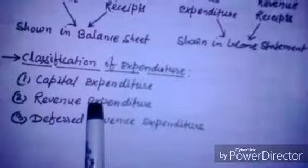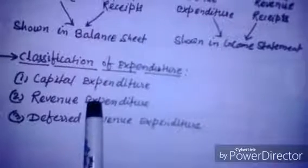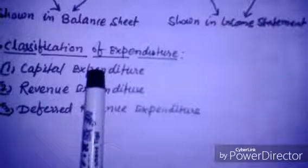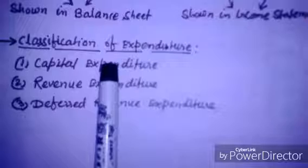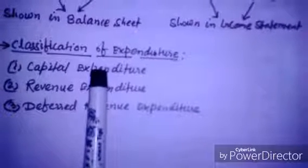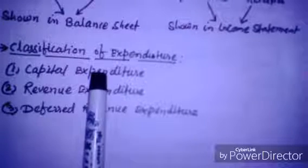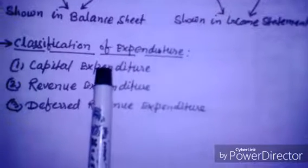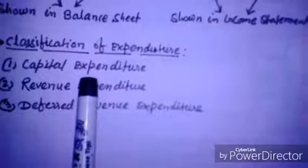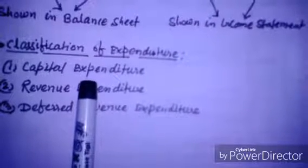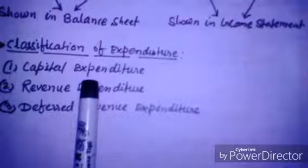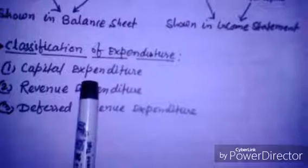Examples of capital expenditures: first, expenditures resulting in the acquisition of long-lived assets such as land, building, machinery, plant, furniture, etc. Second, expenditures resulting in extensions or improvements of fixed assets — for example, amount spent on increasing seating accommodation in a cinema hall, or remodeling of an old station. Third, expenditures incurred for purchase, installation, or erection of fixed assets, such as wages incurred on erecting a plant. Fourth, expenditures incurred for acquiring the right to carry on business — goodwill, copyright, patent rights, etc. Fifth, expenditure incurred for substitution of a new asset for an existing asset.